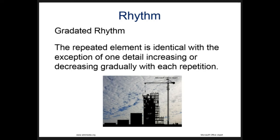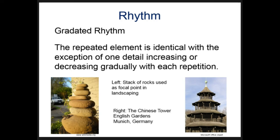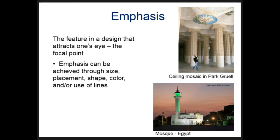Gradated rhythm is where we see something with similar shapes — same shape but different sizes, like similar figures in geometry. Here we see buildings getting bigger as we move across, or stones stacked from big to small, or this pagoda — a Chinese tower — where the tiers graduate in size.